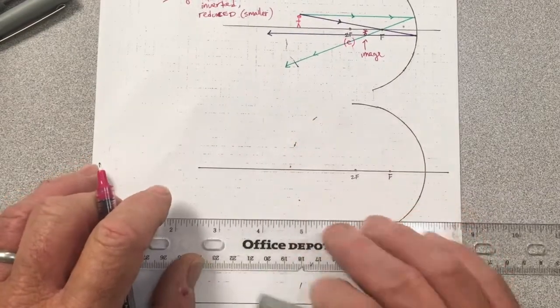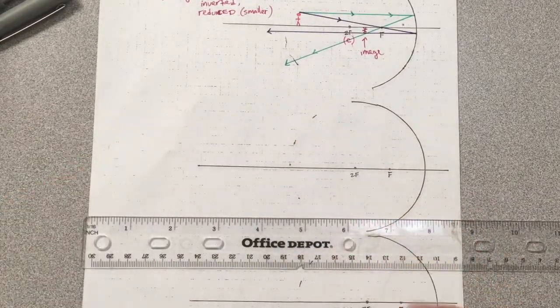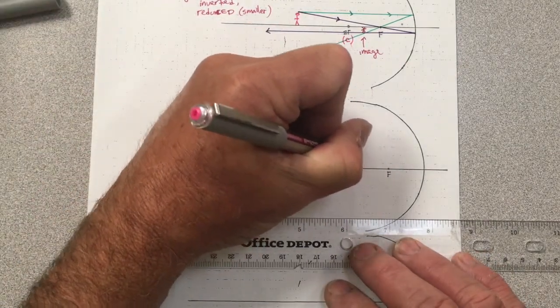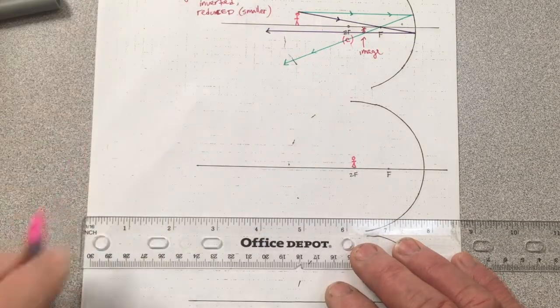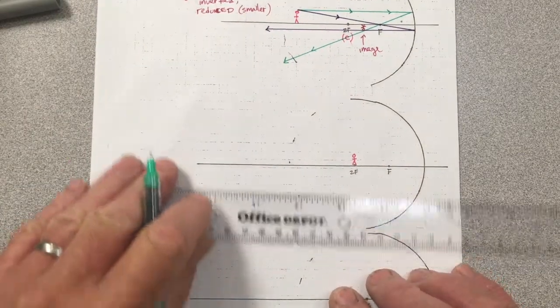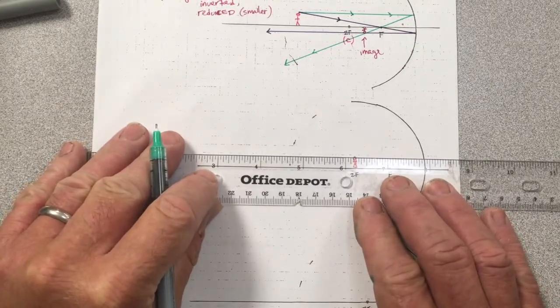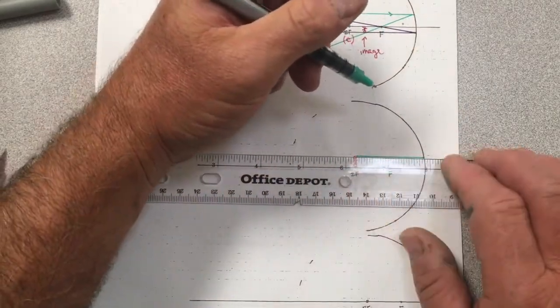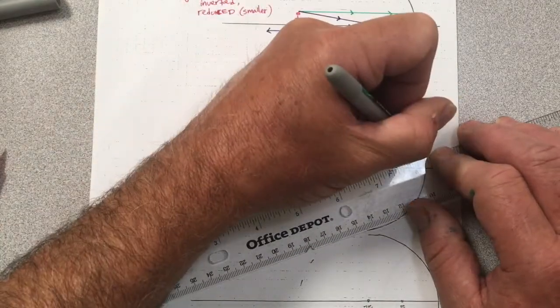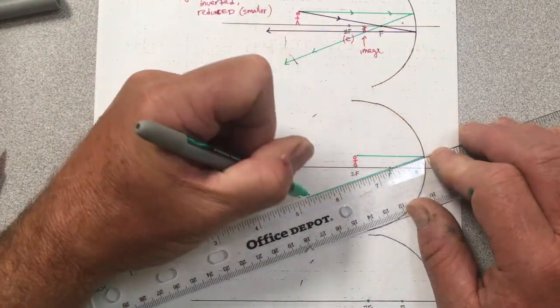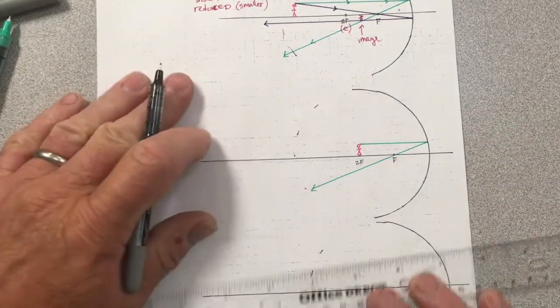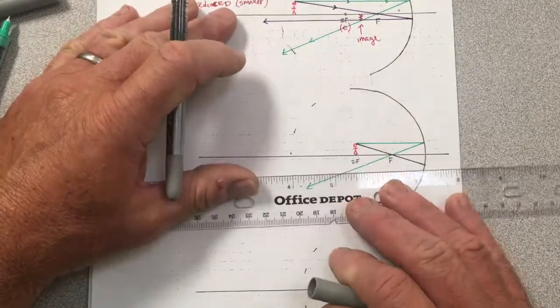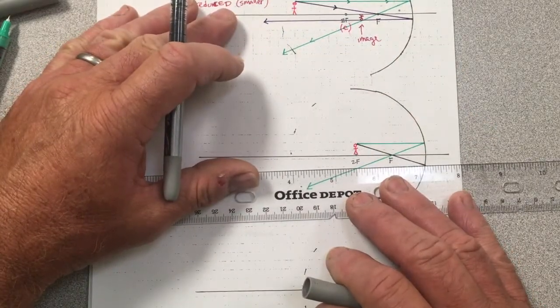The next case is one I like to do when the object is at the center of curvature 2F. Again, ray 1 travels parallel to the principal axis and then after reflecting travels through F. Ray 2 goes first through F on the way to the mirror.